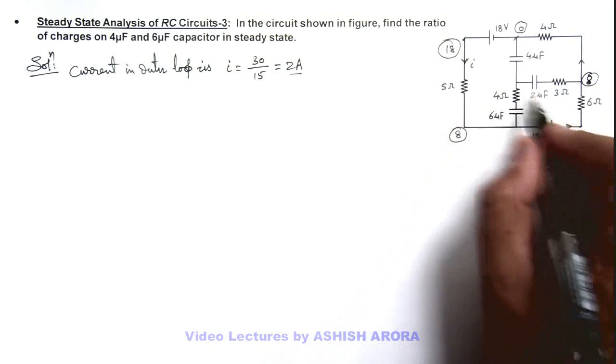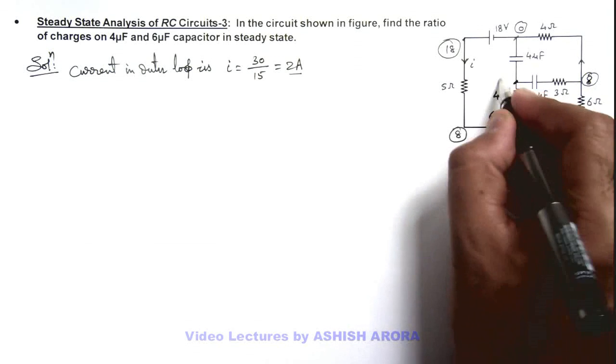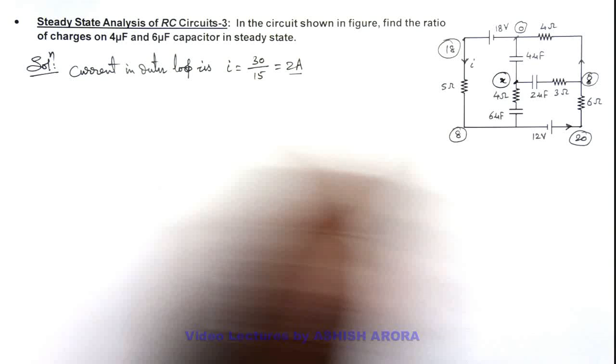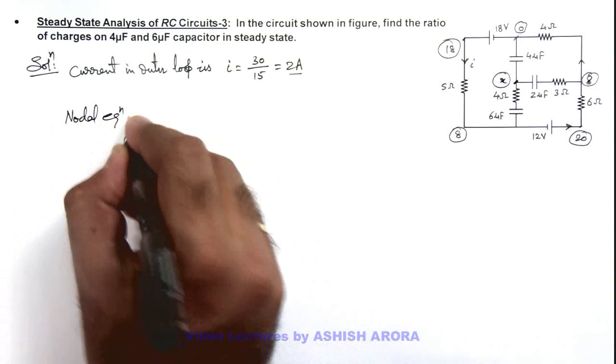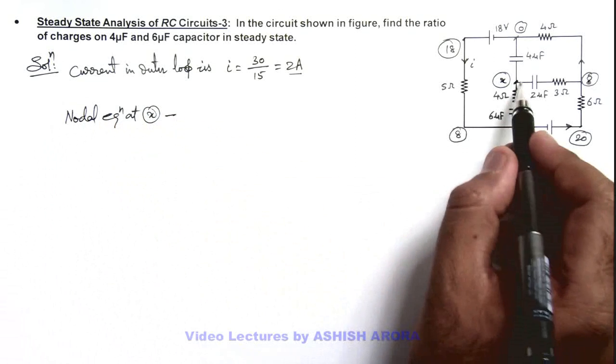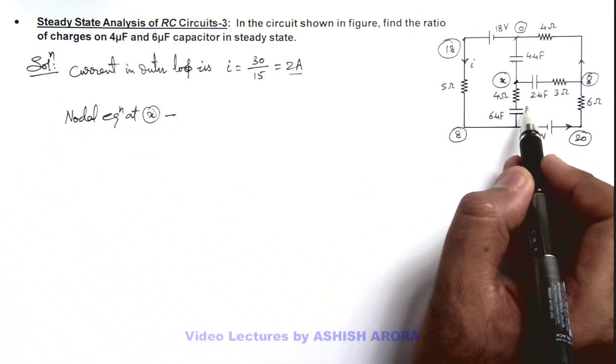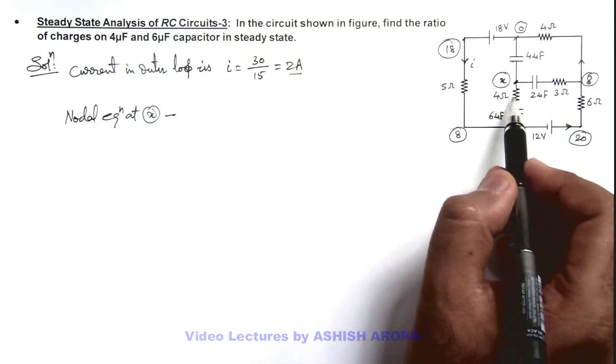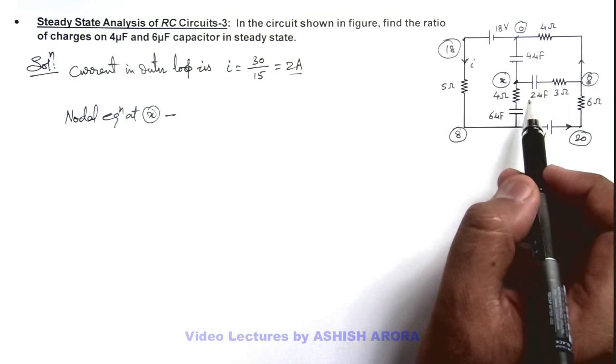As we know the potential at all the points here, we can take the potential at this junction as x and we write nodal equation at x, which can be written as sum of the charges on these 3 plates of capacitor would be zero. As no potential drop is there across this 3 ohm and 4 ohm resistance because no currents are flowing through these resistances.